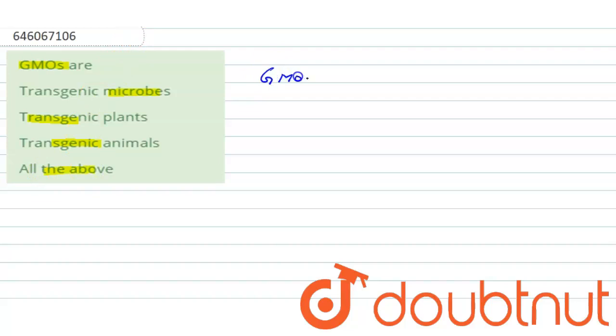So first of all, GMOs stands for genetically modified organisms. Right, so genetically modified organisms, which are GMOs, can be defined as organisms. So they can be plants.